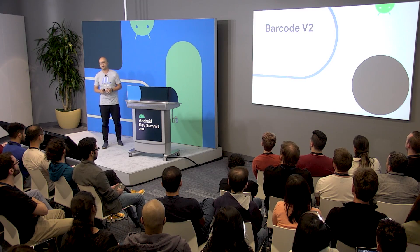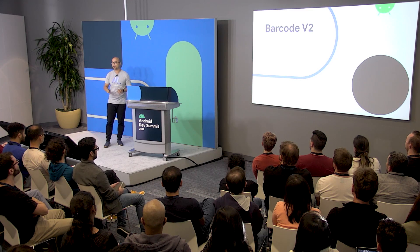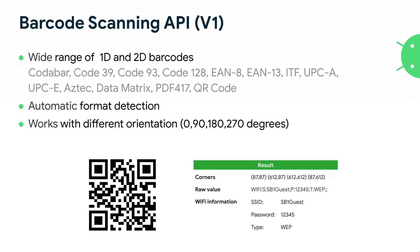The first example is Barcode V2, which we just released. Barcode V1 is one of the first features released in 2018. It supports a wide range of barcode formats, can automatically detect the format, and supports different orientations. It's been well received — there are now more than 3,000 apps using this feature in the market.